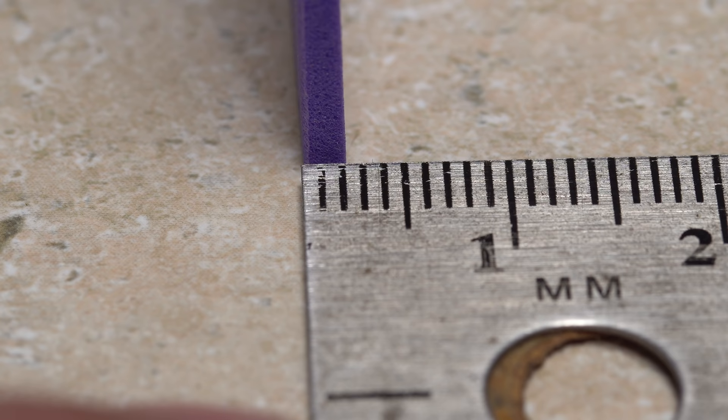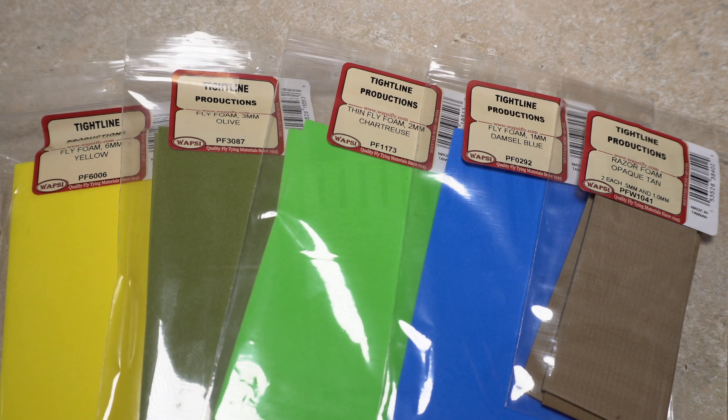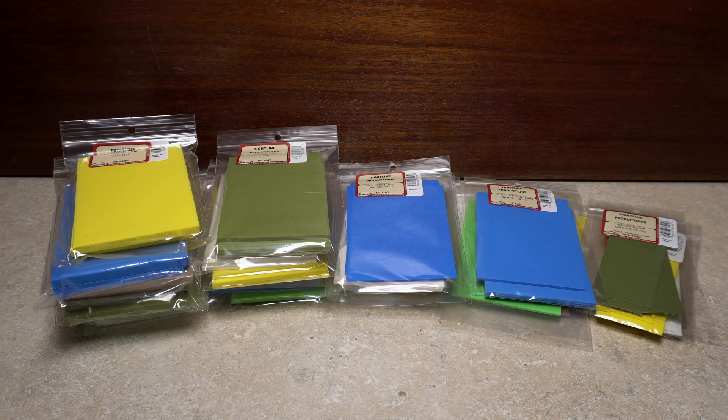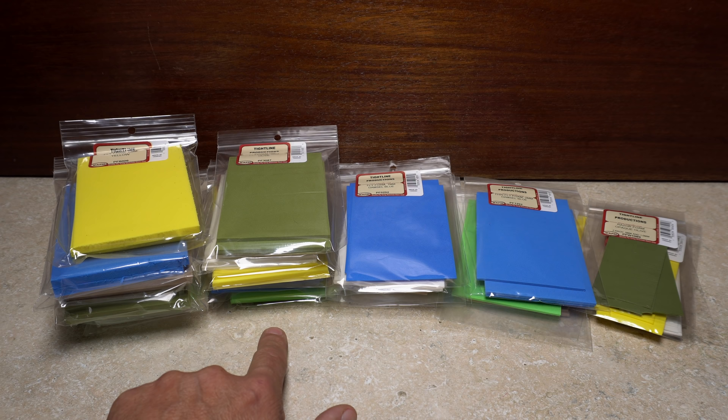Sheet foam is available just about everywhere, from big box and grocery stores to your local fly shop. Most of these fairly large sheets are two millimeters thick and come in every color of the rainbow and then some. Rather than large sheets, fly shop foam generally comes packaged as smaller, more manageable pieces.